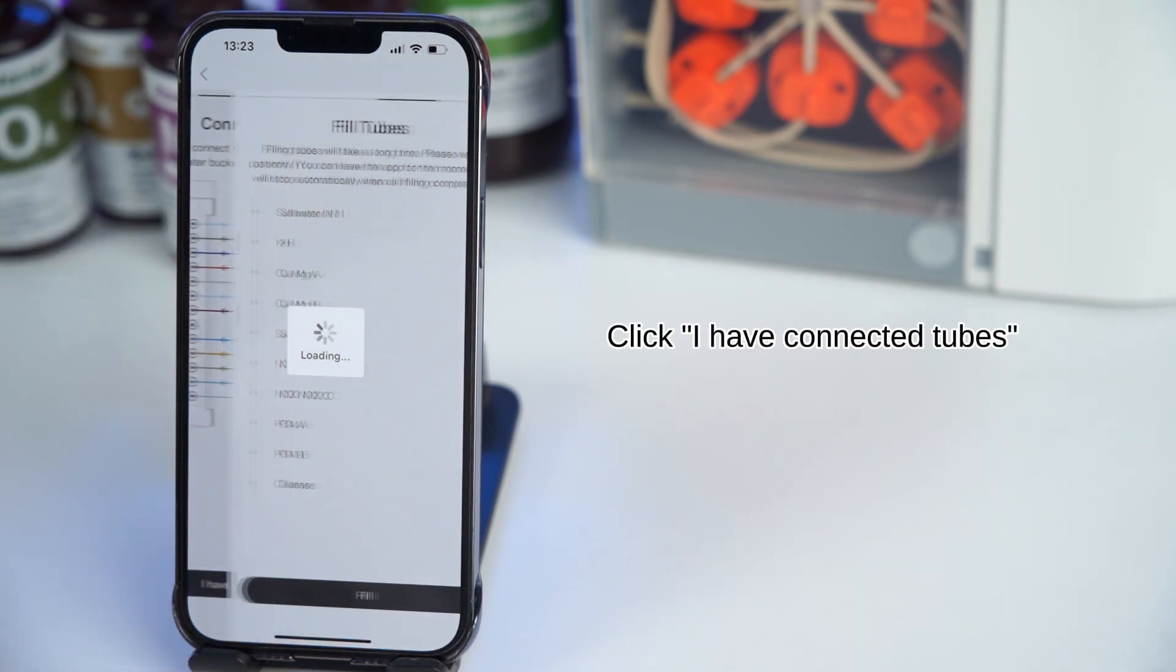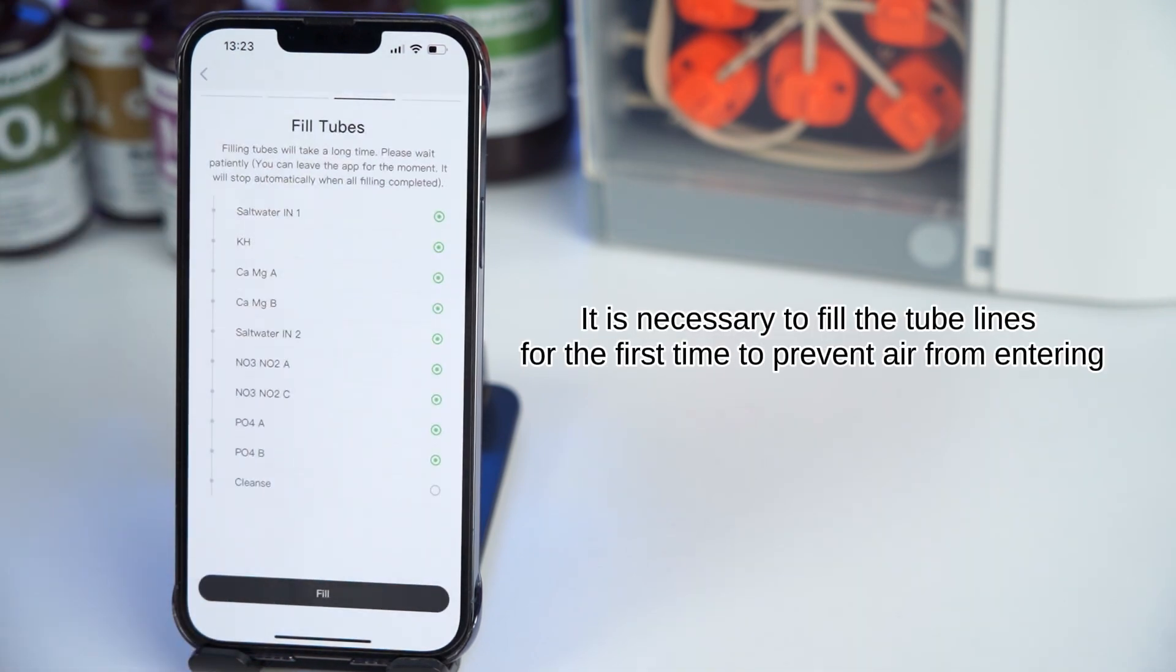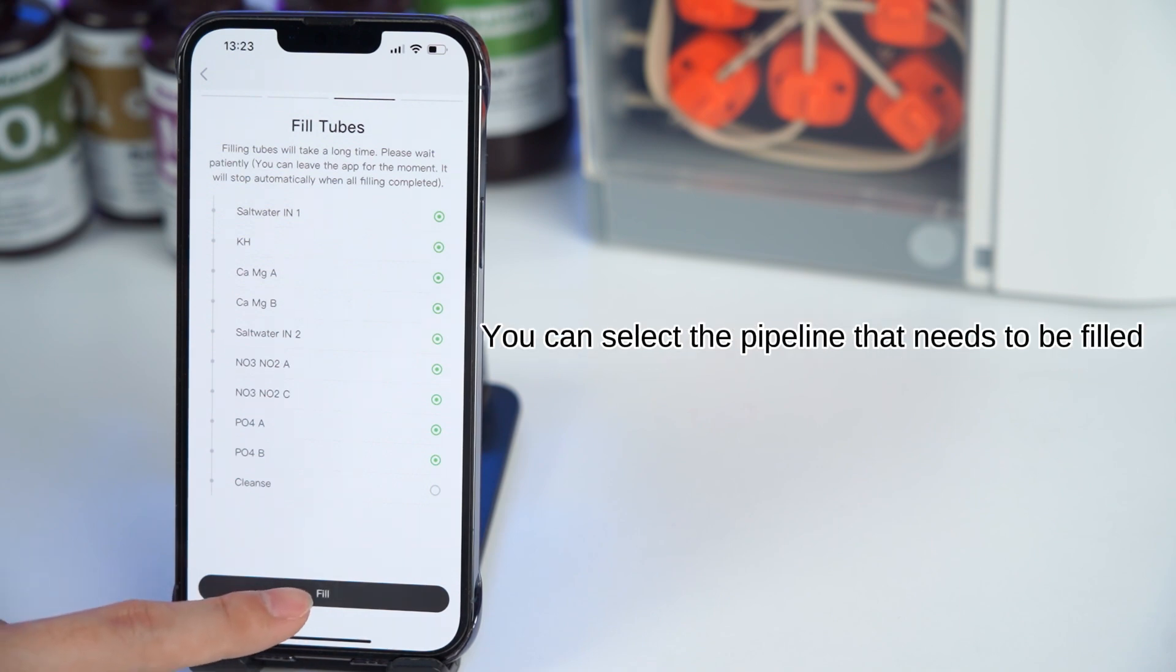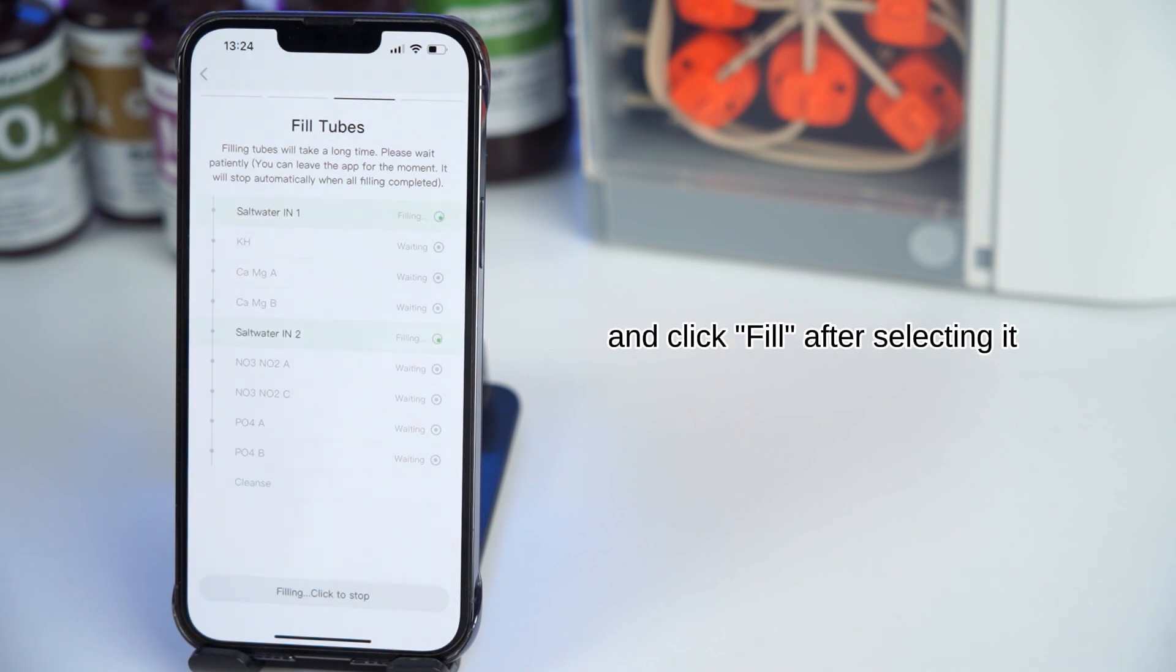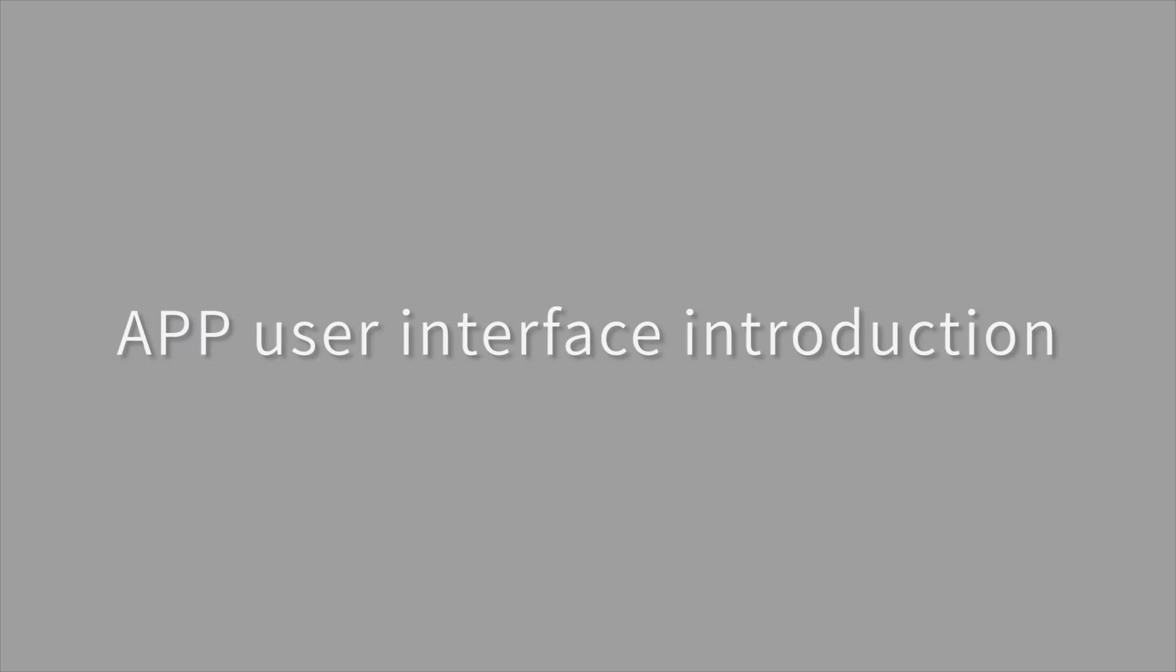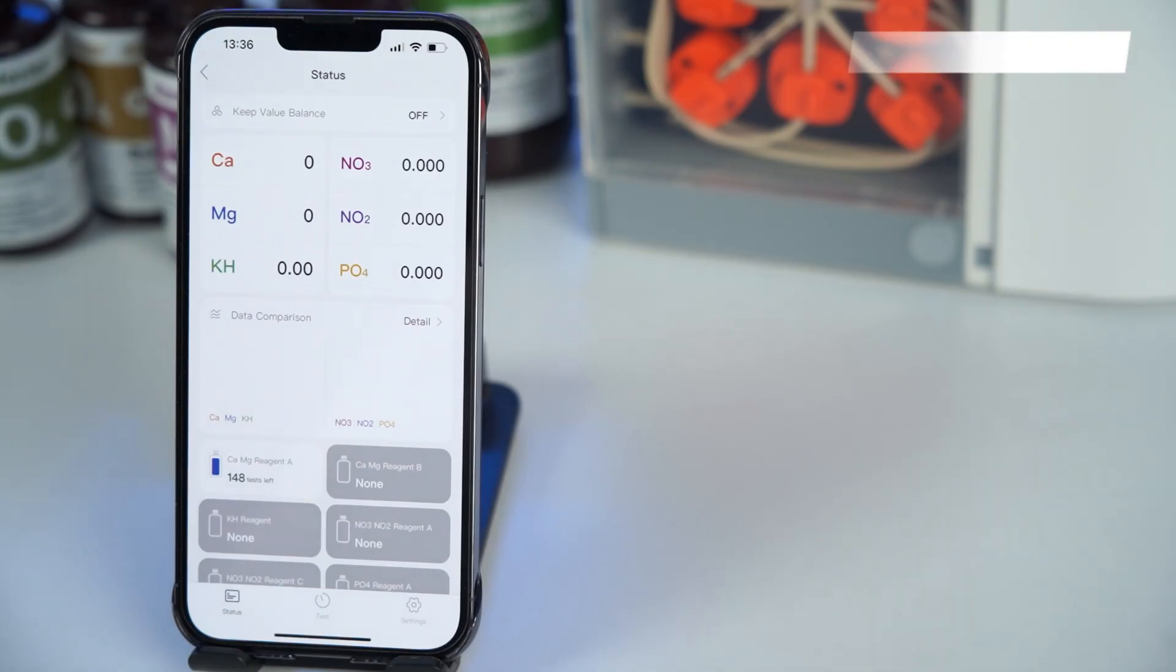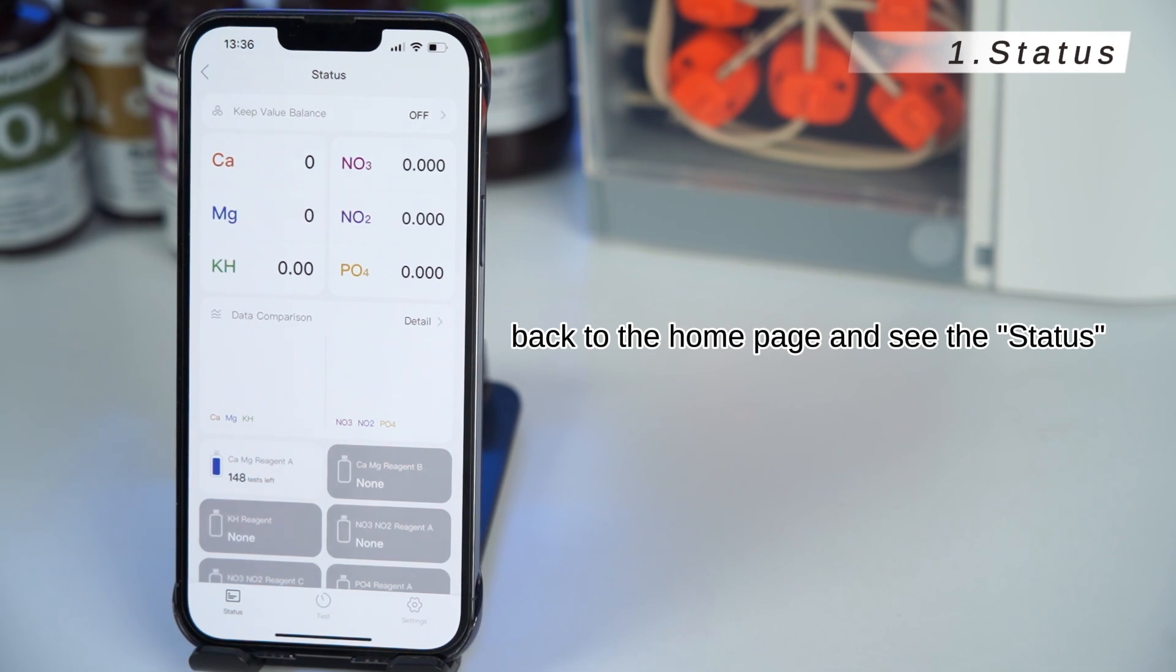Click I have connected tubes. It is necessary to fill the tube lines for the first time to prevent air from entering. You can select the pipeline that needs to be filled, and click Fill after selecting it. After filling is completed, back to the home page and see the status.